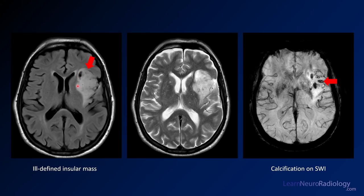Here you see the lesion — a mass in the left insula. It's ill-defined, involving the cortex all the way through. On T2 you see a similar appearance. On SWI, you see areas of hypointensity — those are areas of internal calcification. A CT might also show calcification, but SWI is great for seeing those.